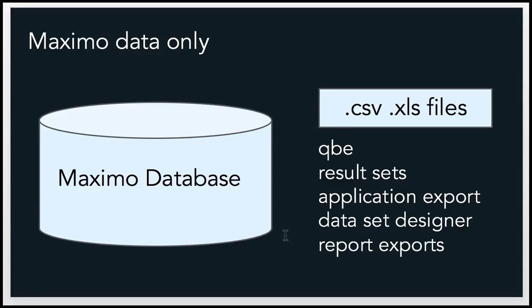If you have other databases in-house, you cannot utilize those external databases — external to Maximo — with your Cognos Analytics entitlement. The analytic entitlement is only for data within the Maximo database. How you get to that data: you can connect directly to your Maximo database, or you can also export data from Maximo in a number of different ways to CSV or XLS format, and that content can be quickly consumed by Cognos Analytics. If you take a result set, get an XLS file, and want to quickly upload it to Cognos Analytics to analyze, that would be covered in the license.